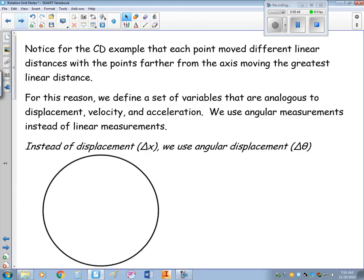Notice for that CD example, even though they're all moving through the same angular displacement, each point had a different linear distance that it traveled, with points farther from that axis moving the greatest linear distance.